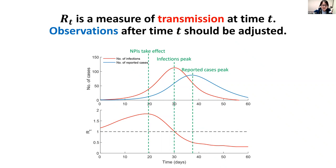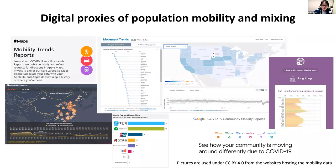So if we care about RT, which is a measure of transmission at time T, observations after time T should be adjusted. How can we shorten the delay between transmission events and observations? There are many different ways researchers around the world do this, and one of them is to look for more real-time digital proxies to track population mobility and mixing. Here are a few examples.